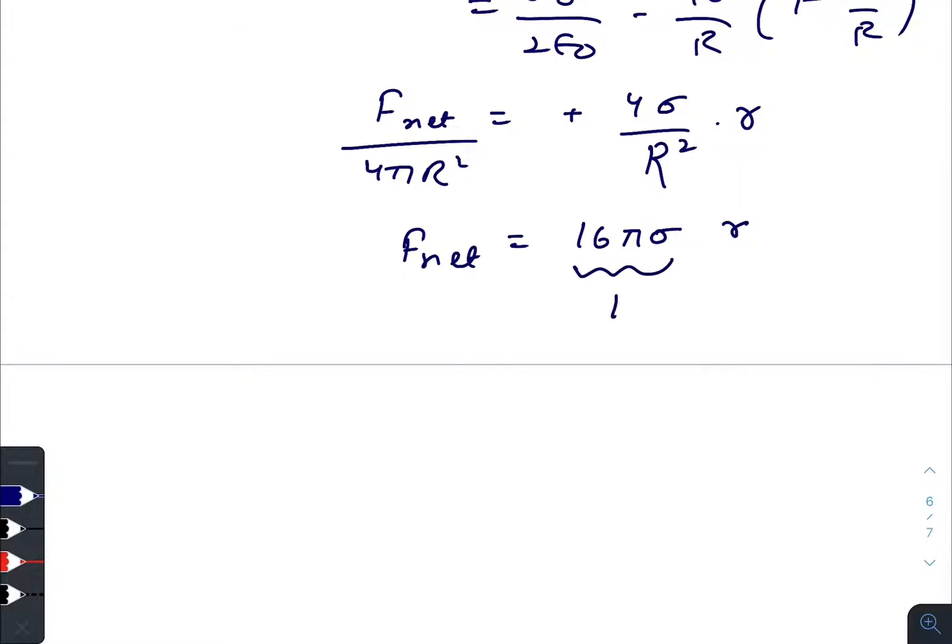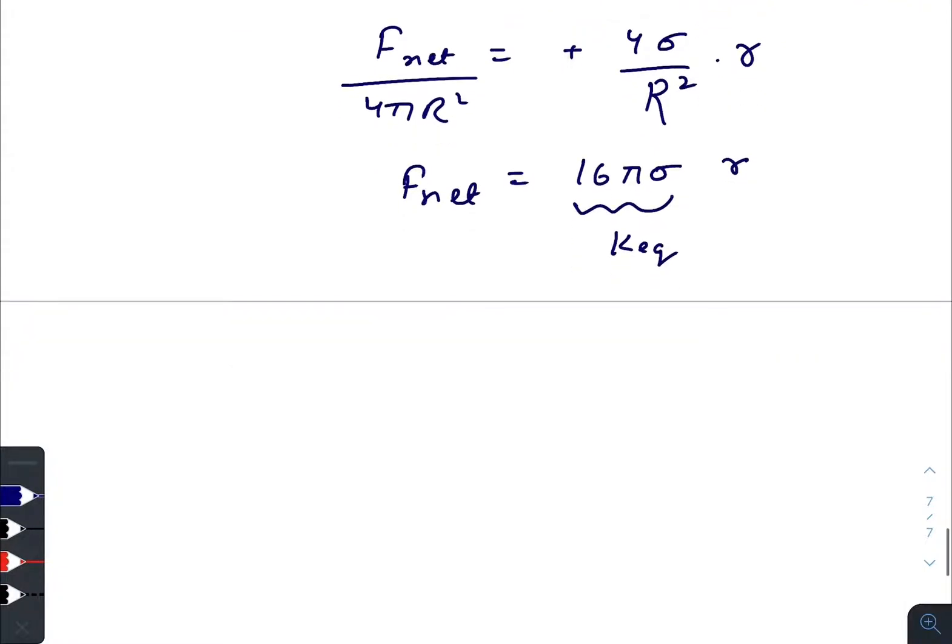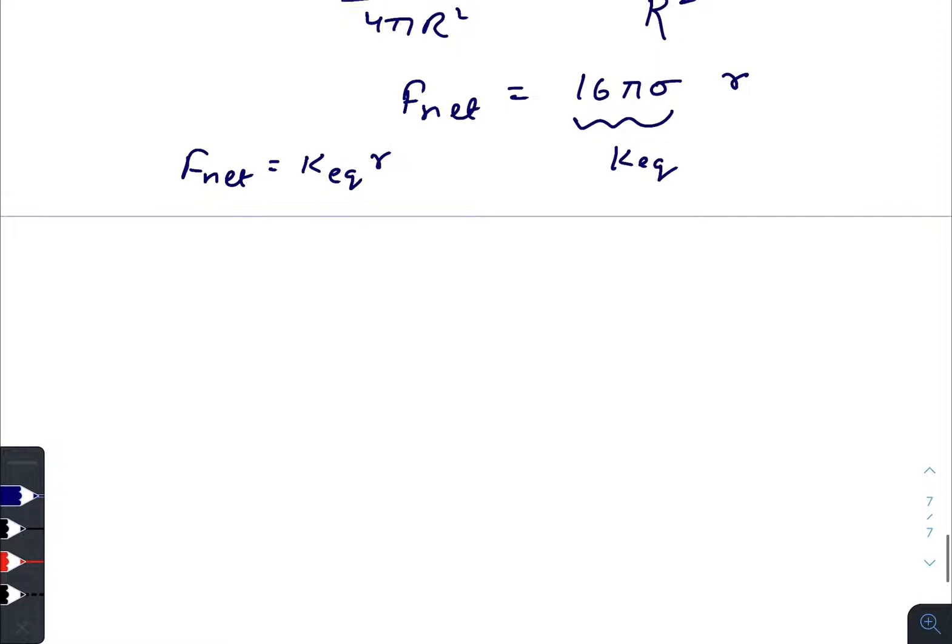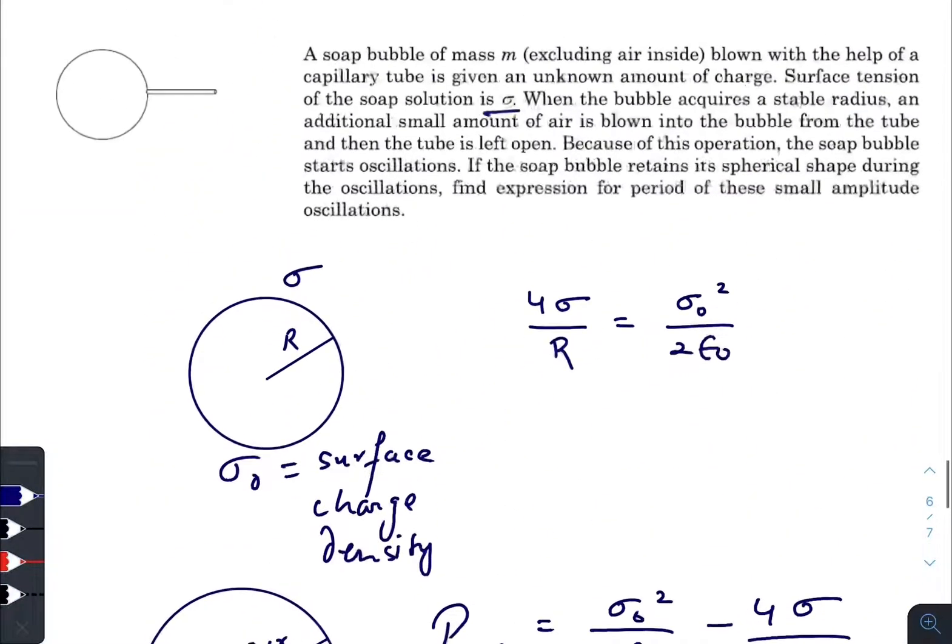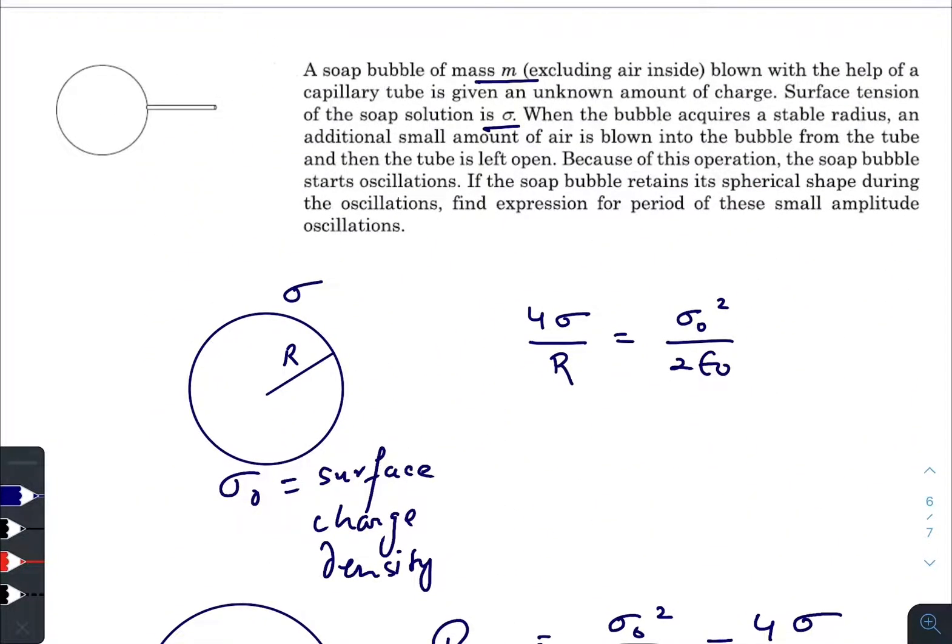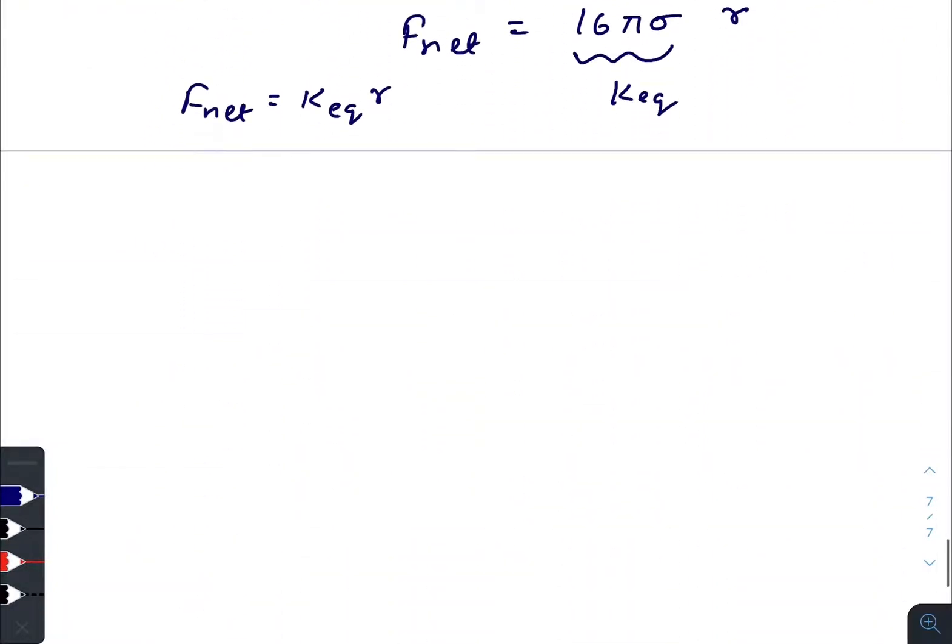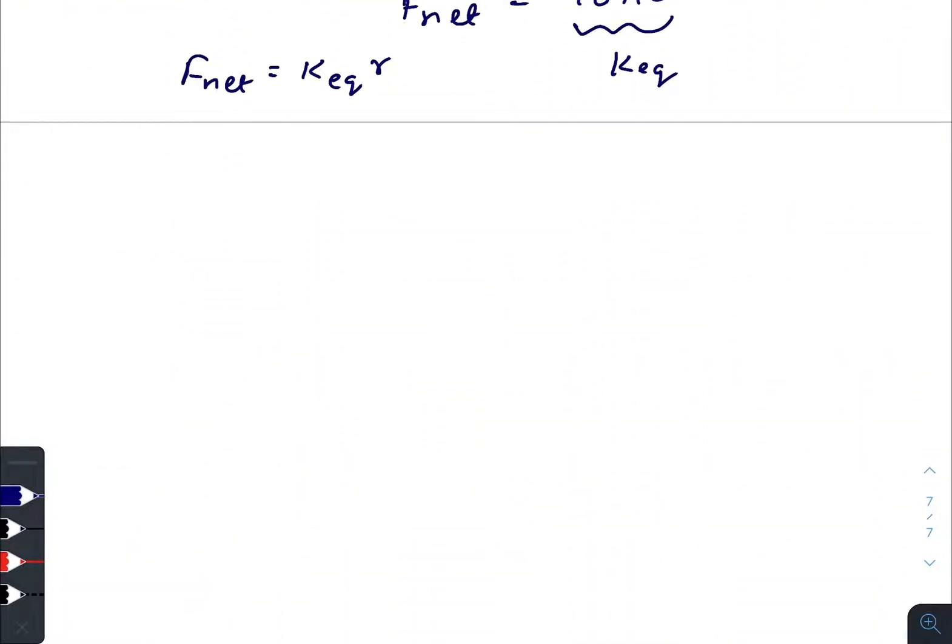This acts as our k equivalent. We can compare this equation with our general equation for simple harmonic motion. Mass of the soap bubble is given as m, and the whole soap bubble is performing simple harmonic motion. You can consider that motion with a heavy spring, you can compare that motion with a heavy spring of mass m.